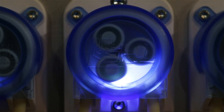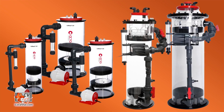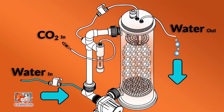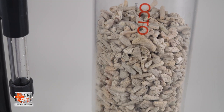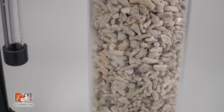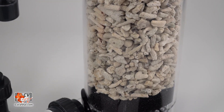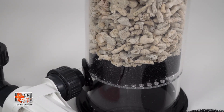Such as this one by GHL. A calcium reactor is another popular option. How do they work? Tank water is fed into a chamber that is filled with carbonate media, and carbon dioxide is then injected, causing the media to dissolve.